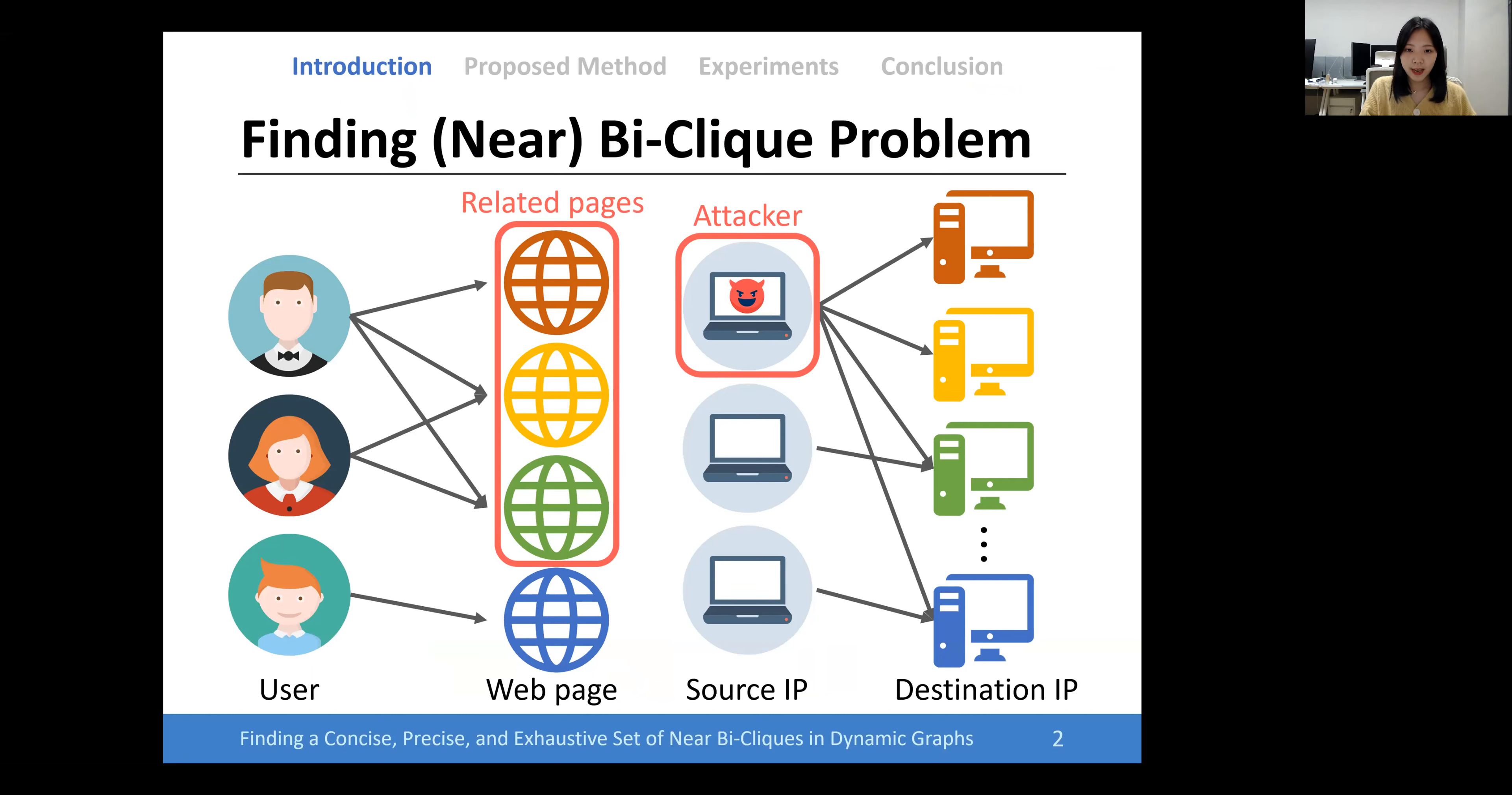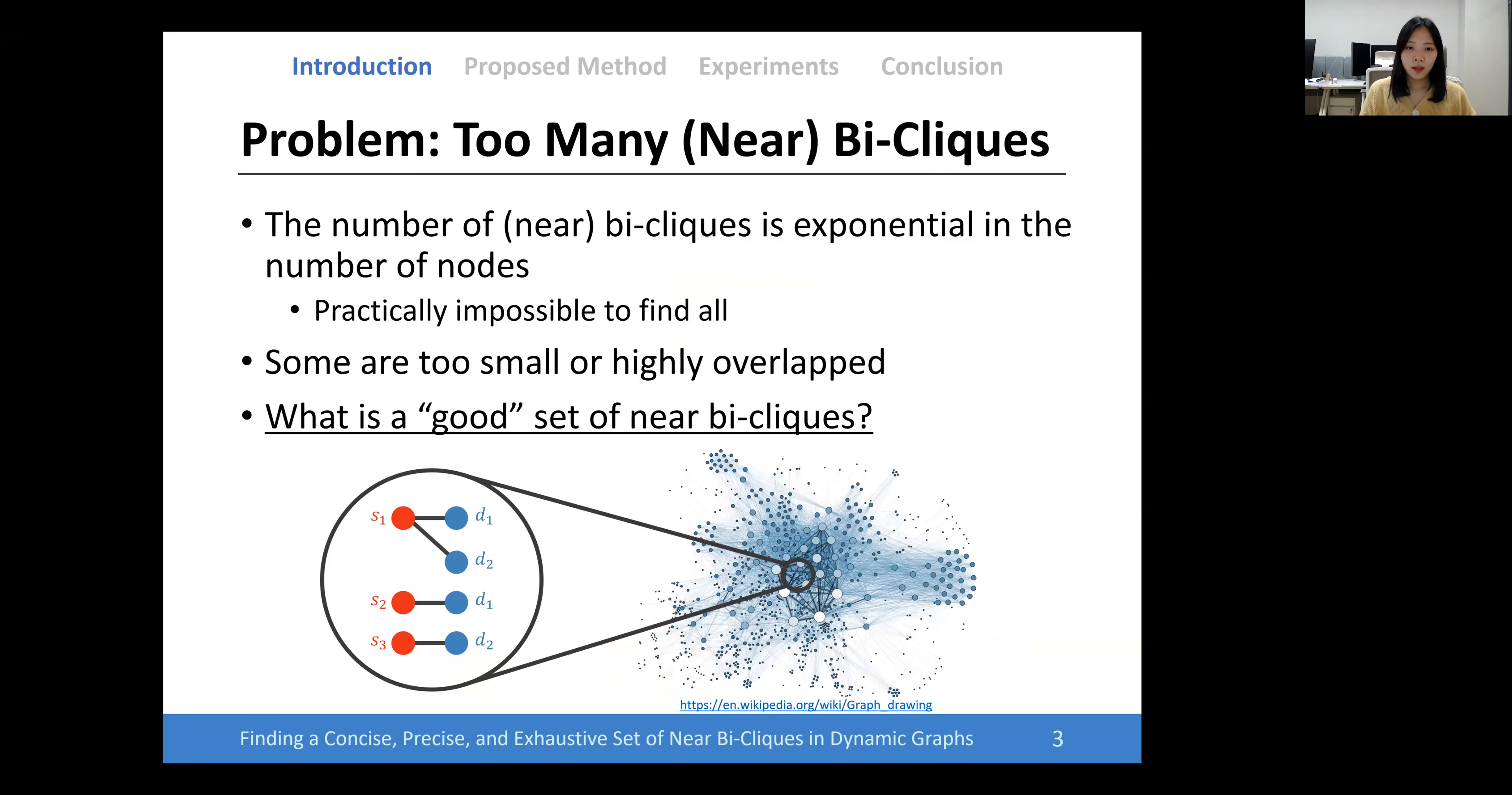A variety of tasks on graphs, including community detection, anomaly detection, compression, and graph understanding, are about finding near bi-clique problems. The number of near bi-cliques is exponential in the number of nodes, so it is practically impossible to find all of them.